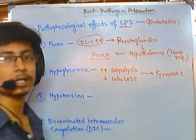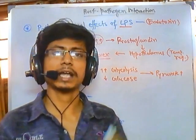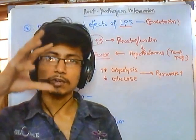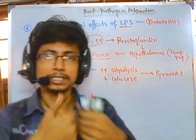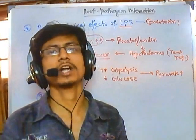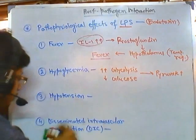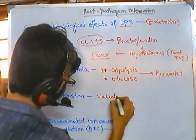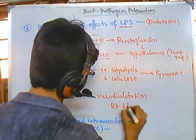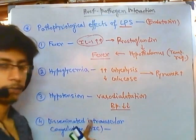The third effect is hypotension — a drop in blood pressure due to vasodilation. When LPS enters the body, there is initially arterial and venular constriction throughout the body, followed by dilation of the blood vessels. This vasodilation results in a drop in blood pressure.